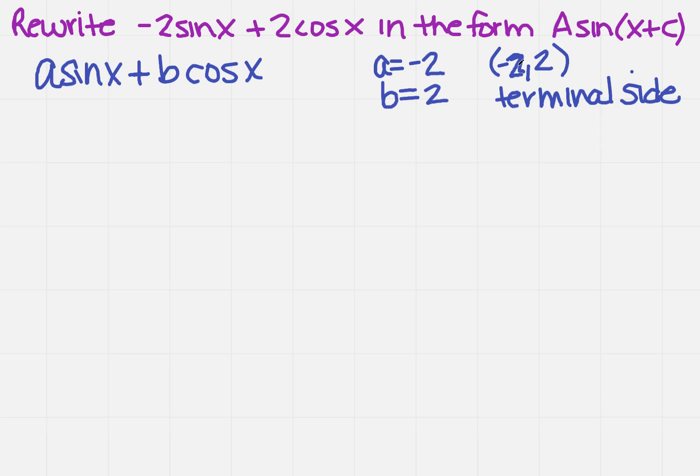Now, what else do we know about this asin(x) + bcos(x)? Remember, that's called a reduction formula. So for the reduction formula, what does that equal? It equals the square root of a² + b² times sine of x plus alpha. So those two are comparable. Those two equal exactly the same thing.